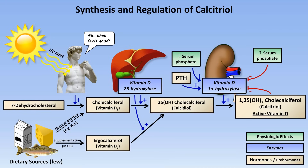Finally, there is a protein called fibroblast growth factor 23, or FGF23. Its role in calcium phosphate homeostasis was discovered about 10 years ago, and the complicated details are still being sorted out. What is known is that it's released by osteocytes and osteoblasts in response to PTH and hyperphosphatemia, and one of its primary functions is to inhibit the activity of vitamin D 1-alpha-hydroxylase. Despite the complexity of all these names, all of these details are necessary to understanding the diagnosis and treatment of calcium and phosphate disorders.